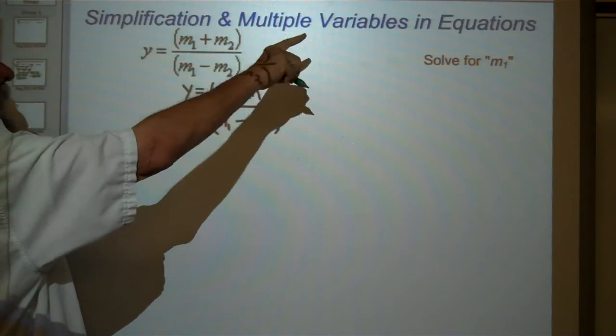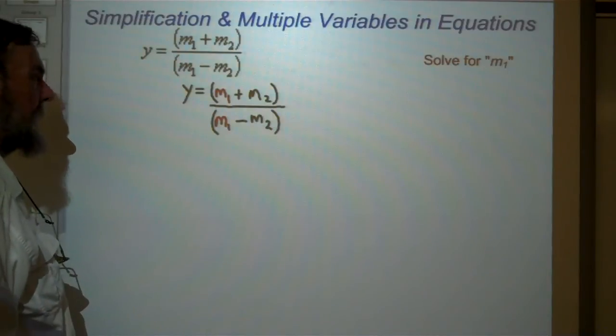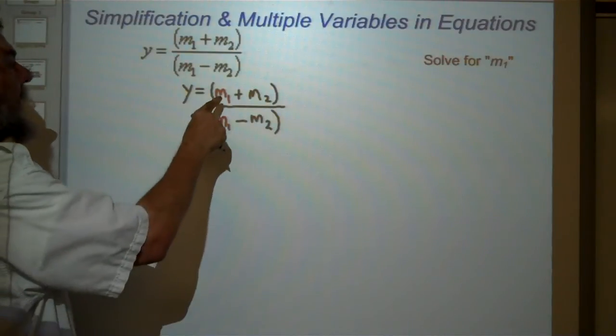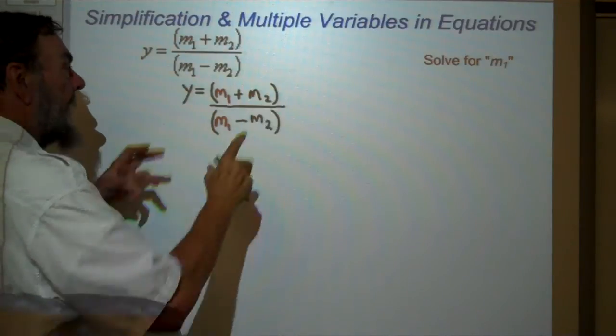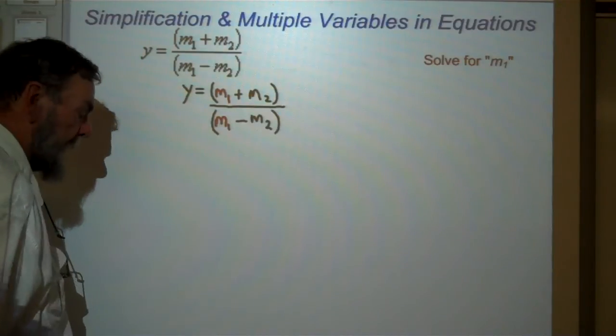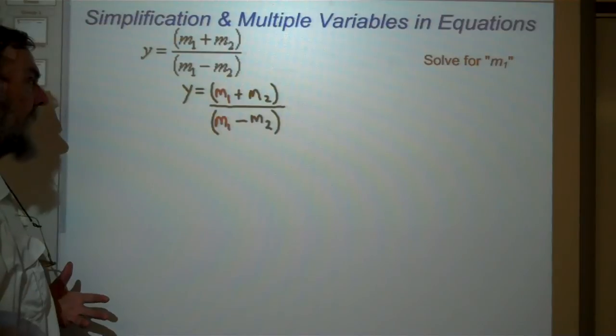Simplification and multiple variables in equations. What does this mean? I want M1 and I've got two of them, and they're locked up inside these parentheses. So how do I get it by itself?